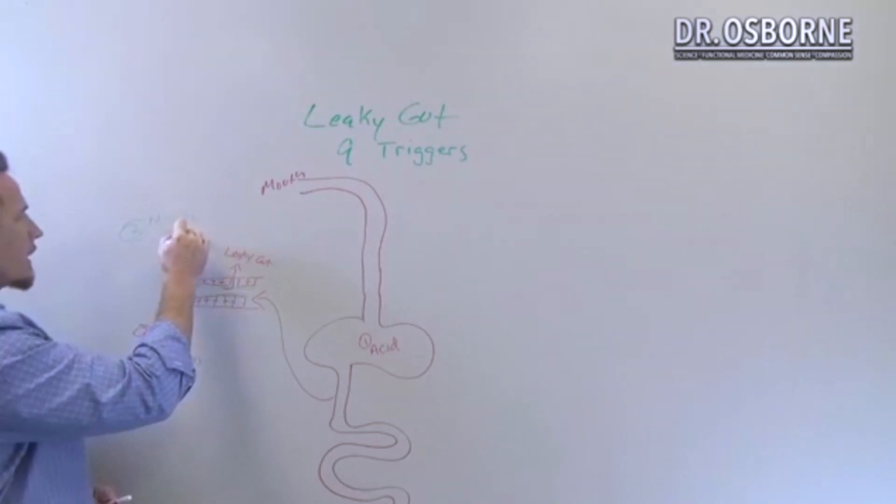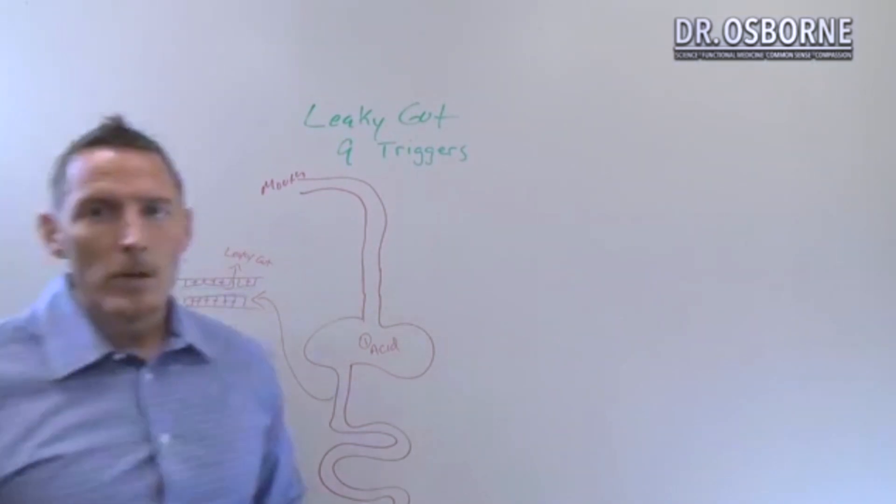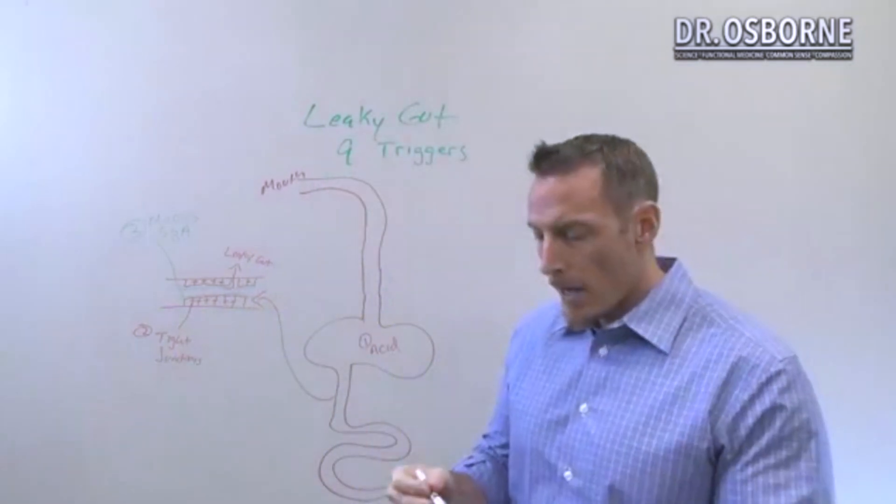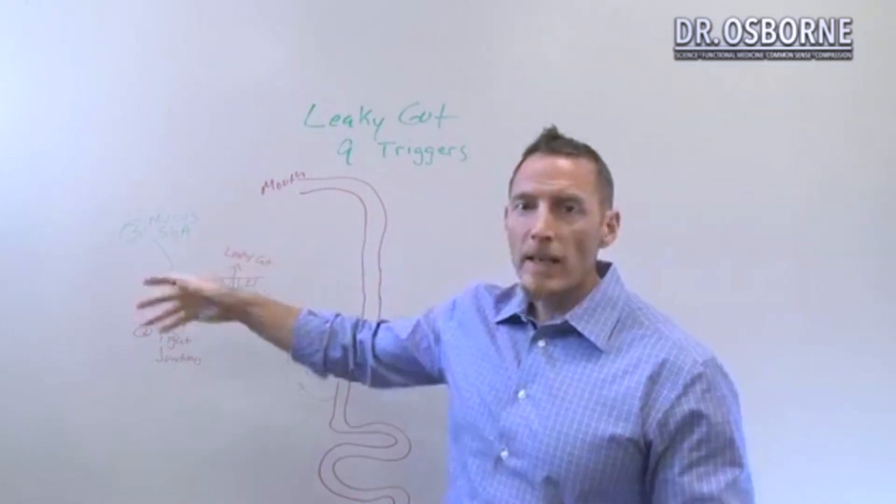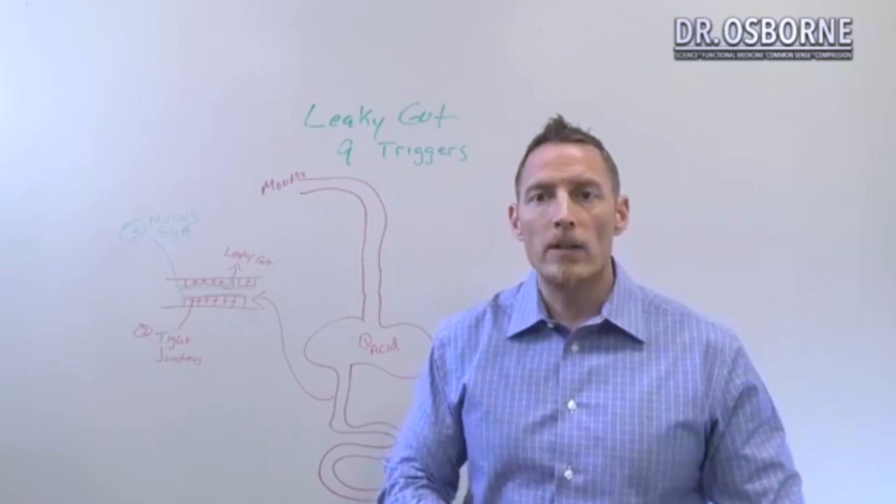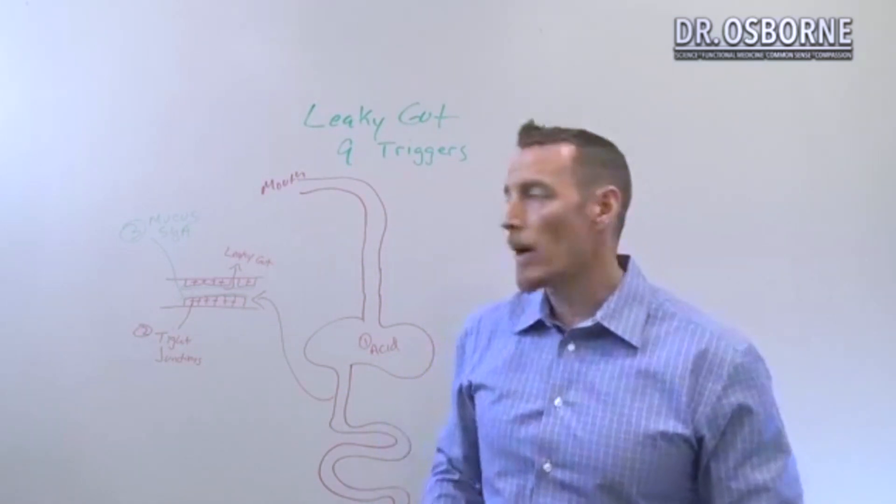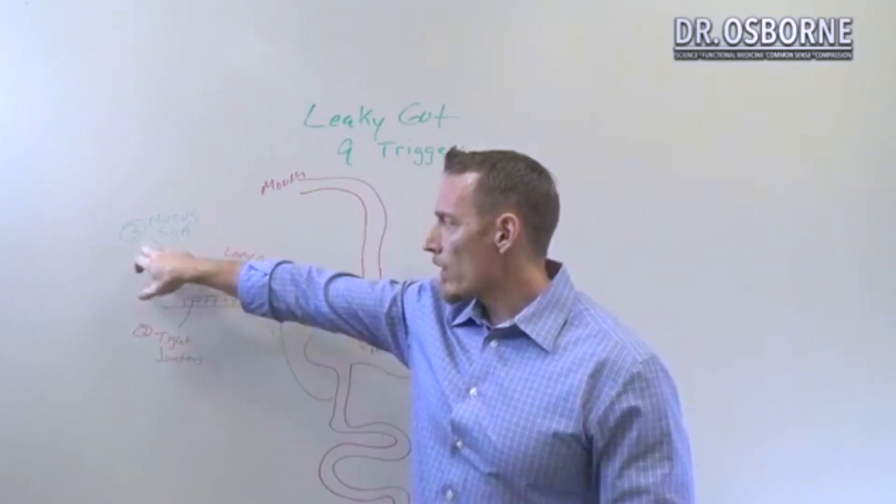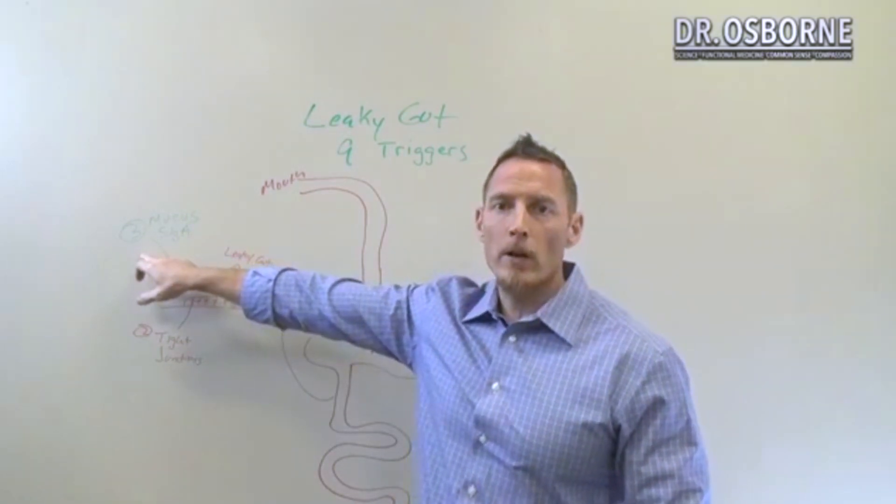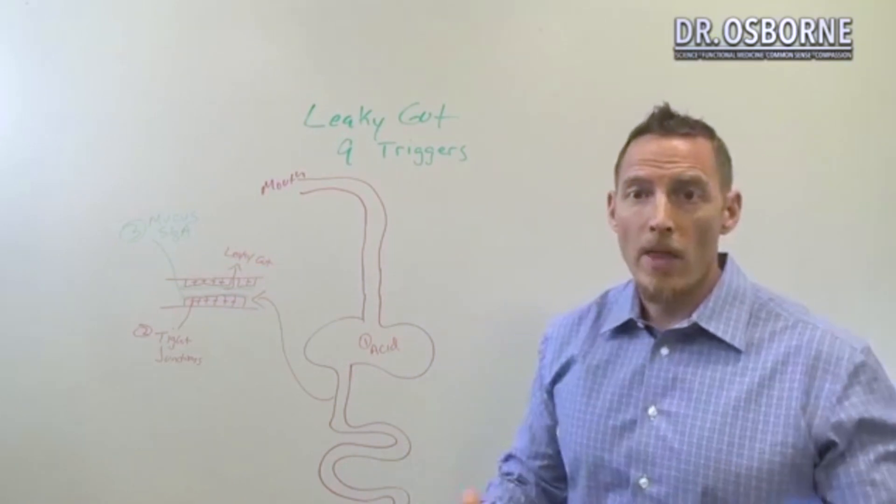So that antibody is very, very critical for protecting you from infections, for binding to things like yeast and parasites, and binding to toxins so that you can poop them out. So if you don't have a solid or strong mucosal barrier, you can get into big trouble and that can contribute to a leaky gut.